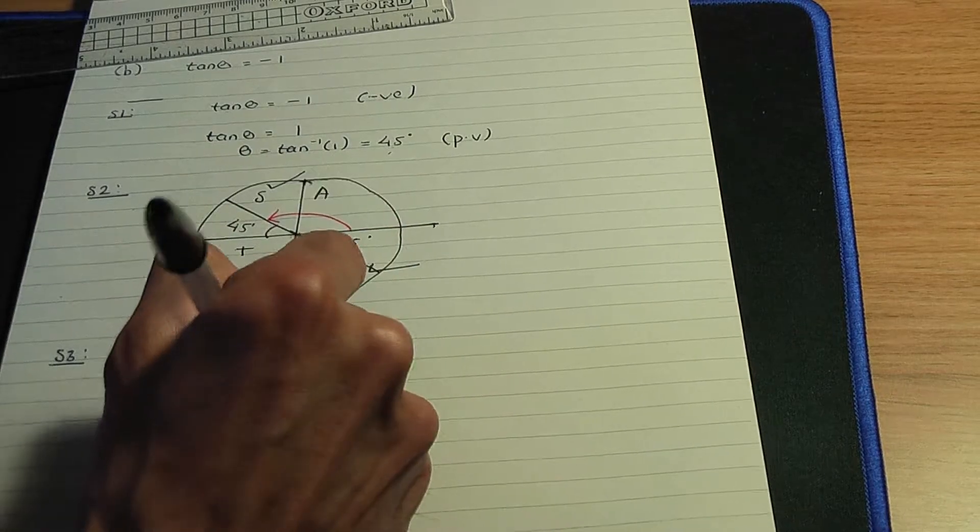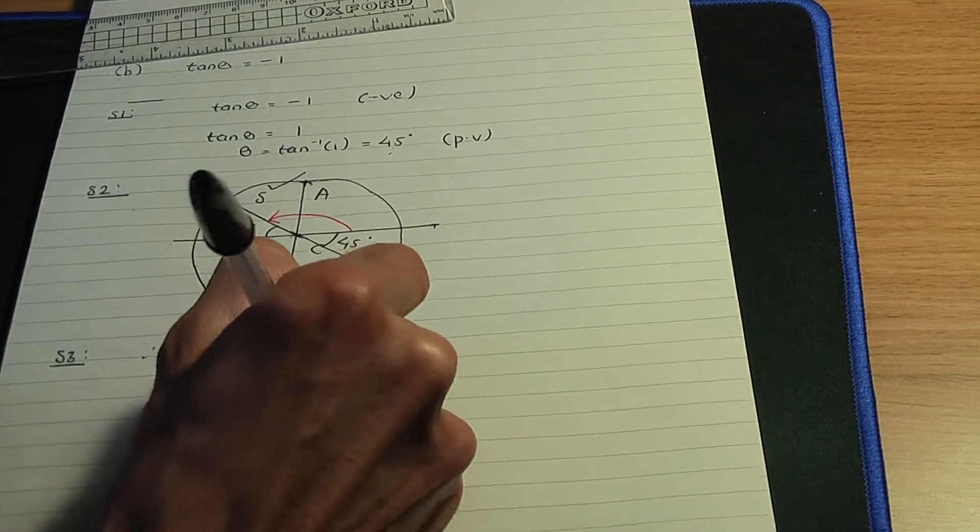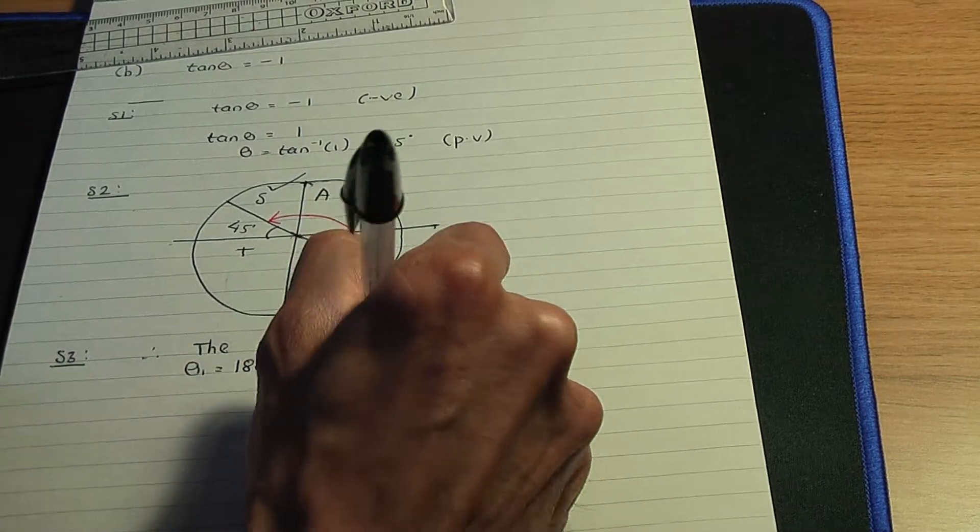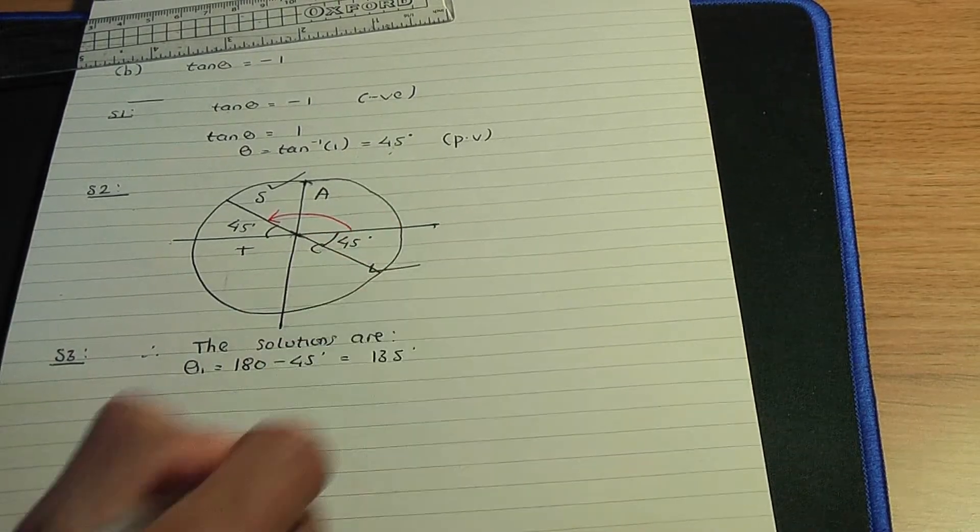So let's write that down. So 180 minus 45 degrees. So in this case, 135 degrees.